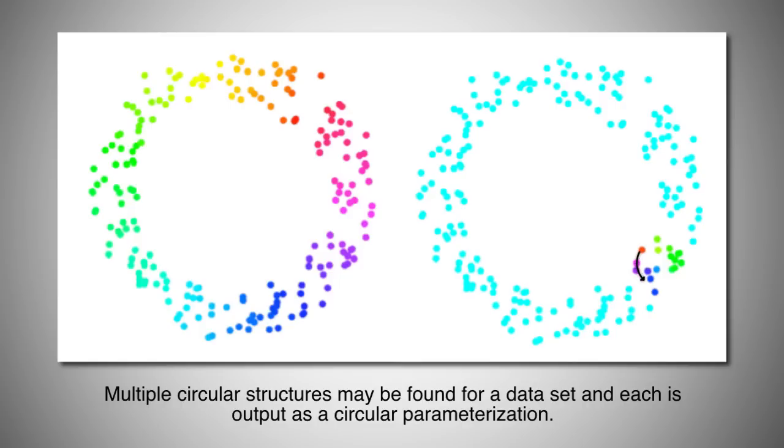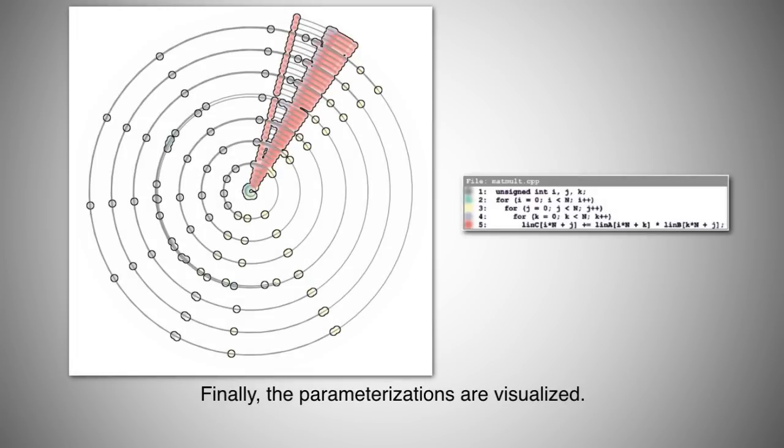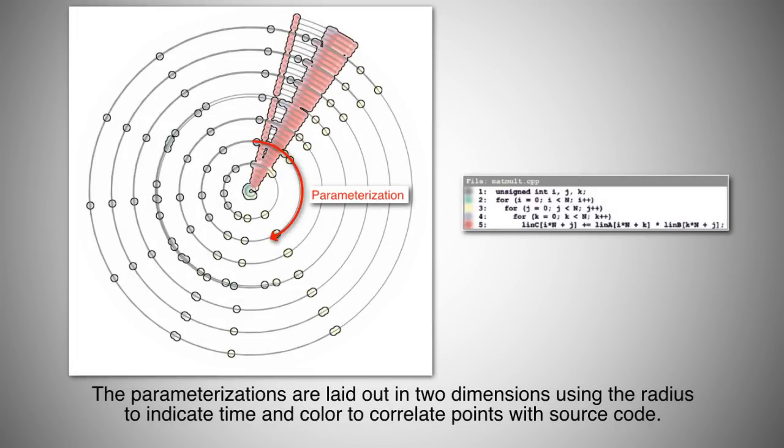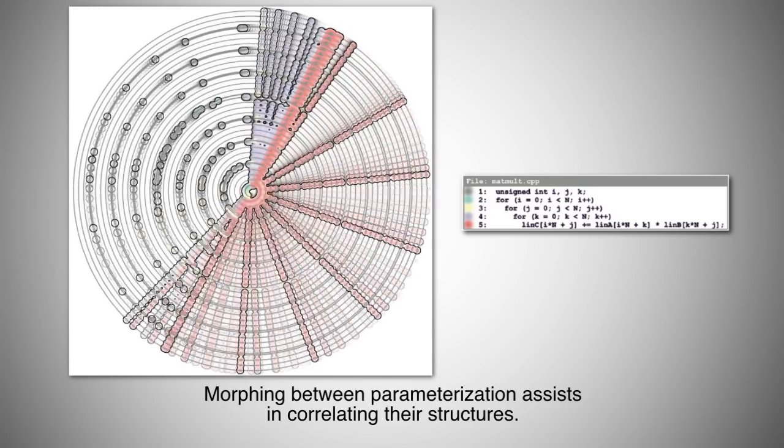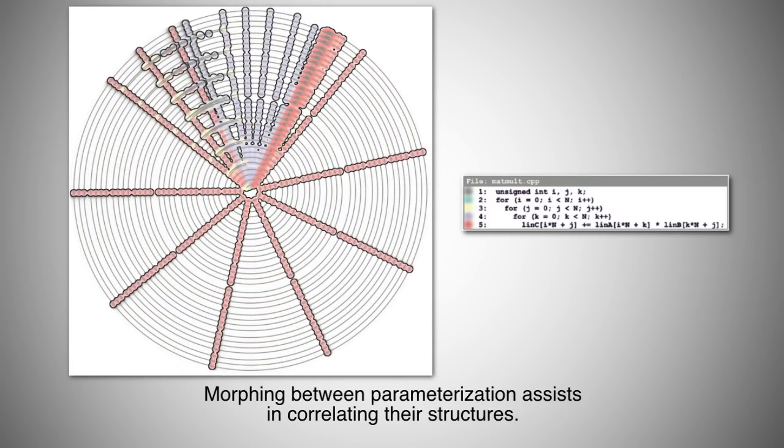Multiple circular structures may be found for a data set and each is output as a circular parameterization. Finally, the parameterizations are visualized. The parameterizations are laid out in two dimensions using the radius to indicate time and color to correlate points with source code. Morphing between parameterizations assists in correlating their structures.